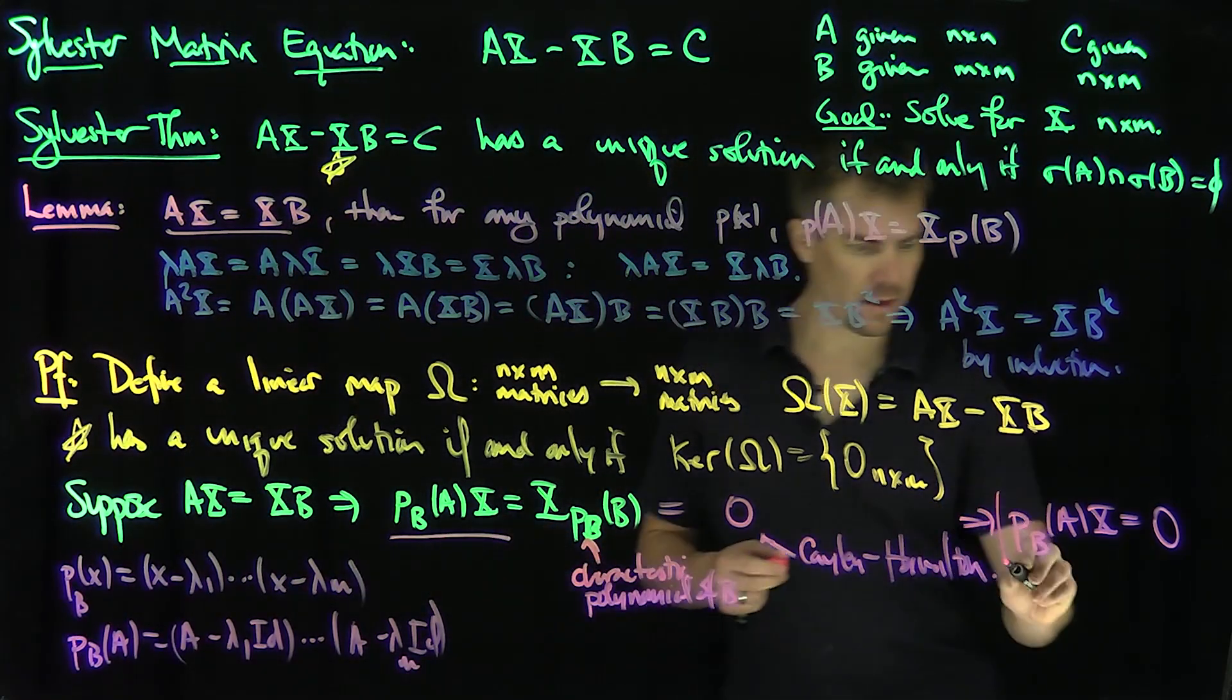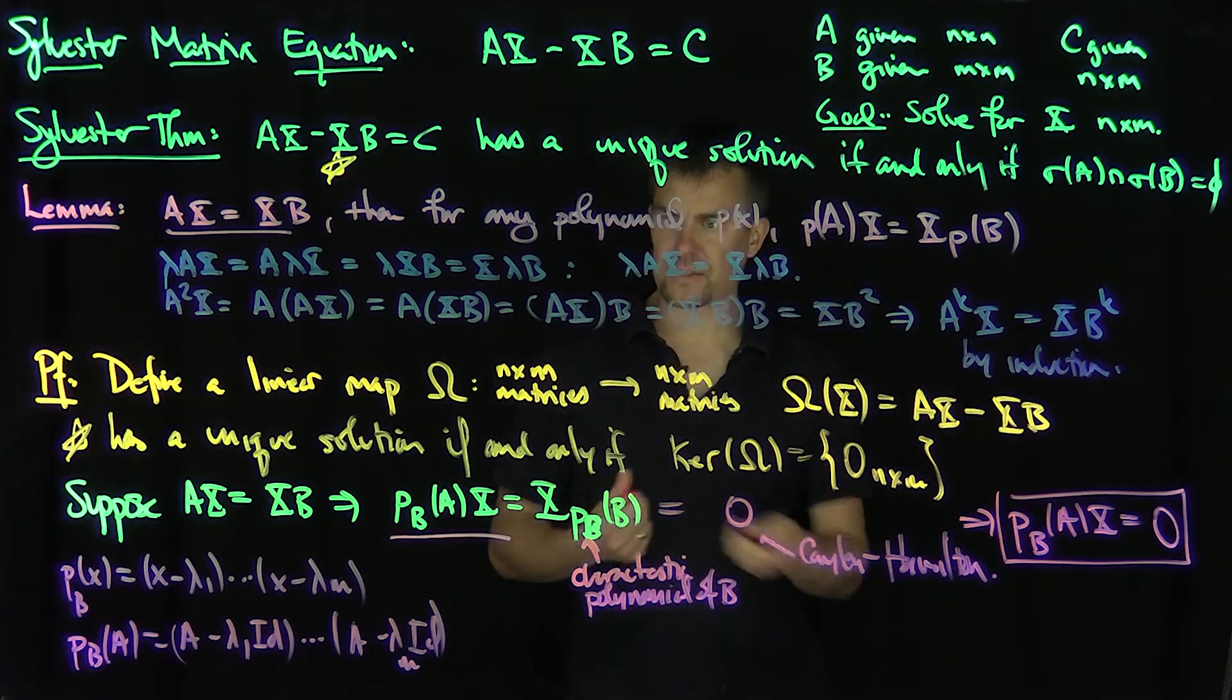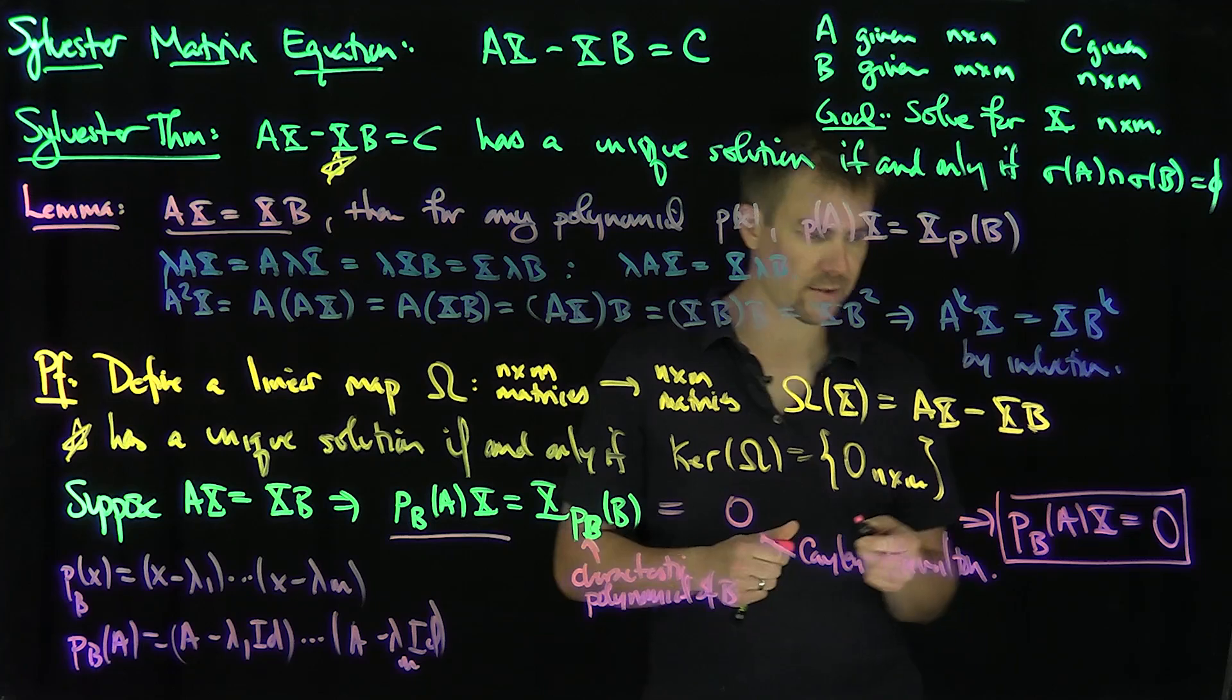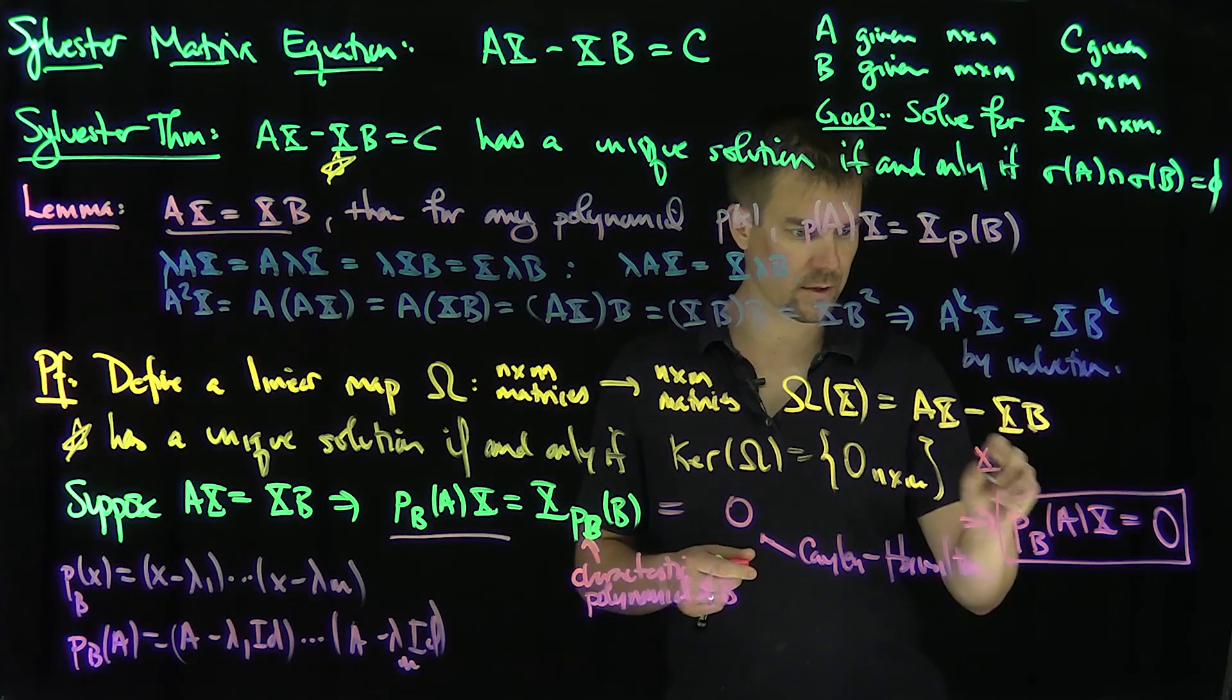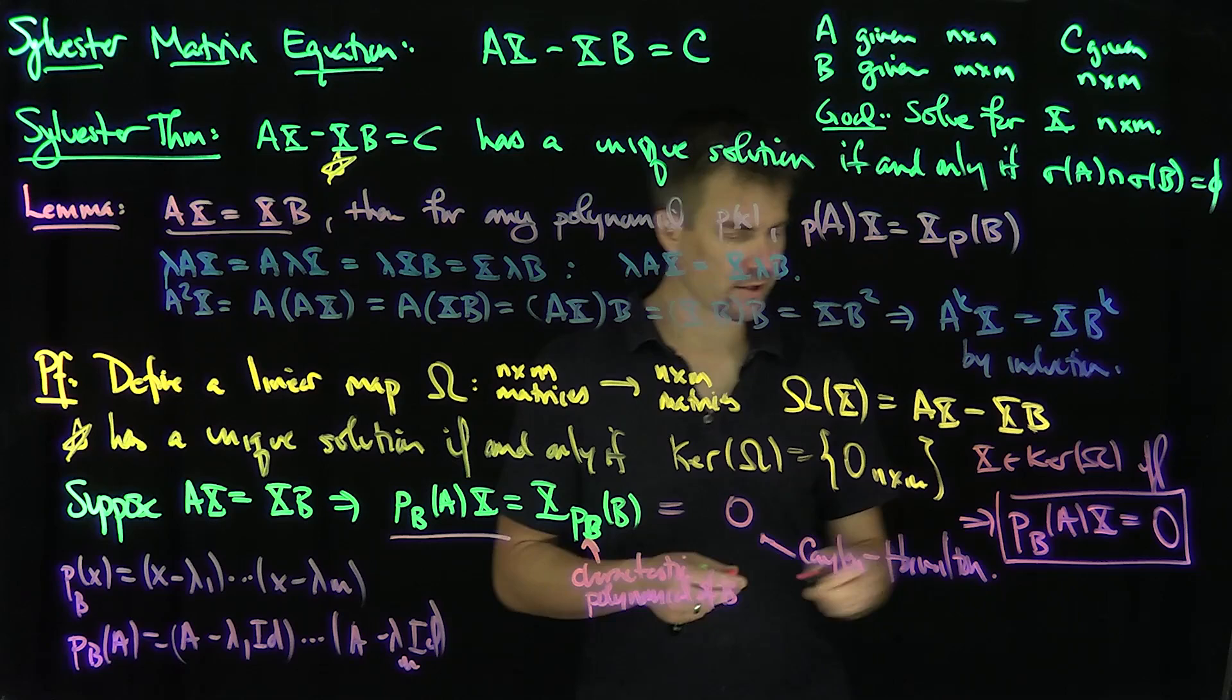So when does this equation hold? X is in the kernel of this matrix omega if and only if this is true. X is in the kernel of omega if and only if this is true.